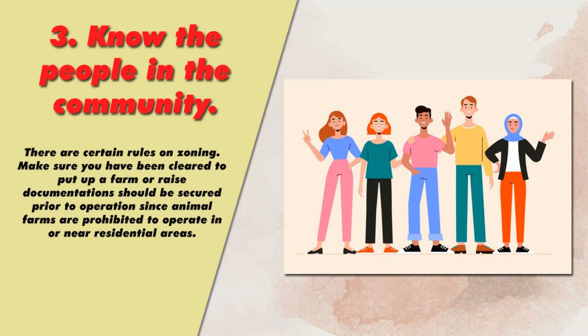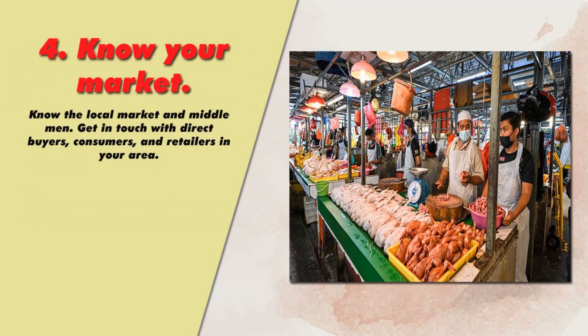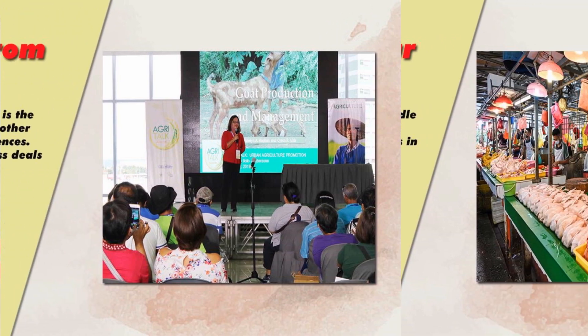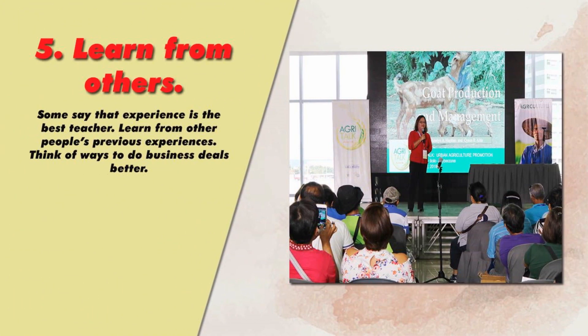Three — Know the people in the community. There are certain rules on zoning. Make sure you have been cleared to put up a farm. Documents should be secured prior to operation since animal farms are prohibited to operate in or near residential areas. Four — Know your market. Know the local market and middlemen. Get in touch with direct buyers, consumers, and retailers in your area. Five — Learn from others. Experience is the best teacher. Learn from other people's previous experiences and think of ways to do business deals better.